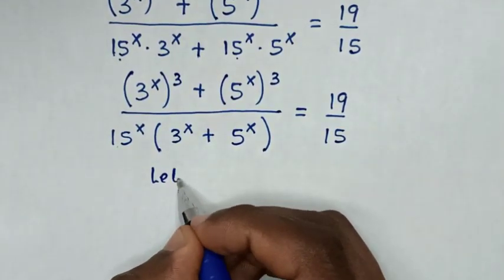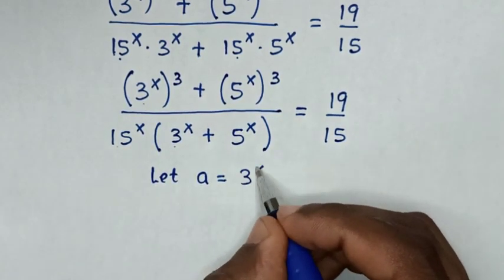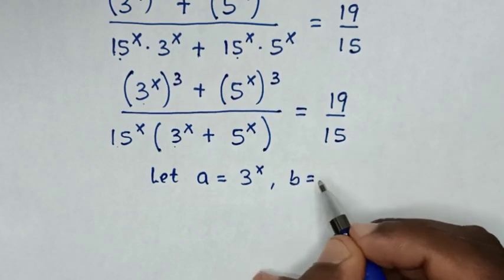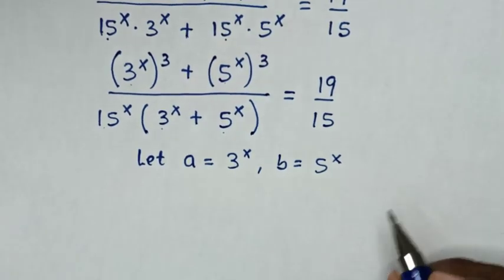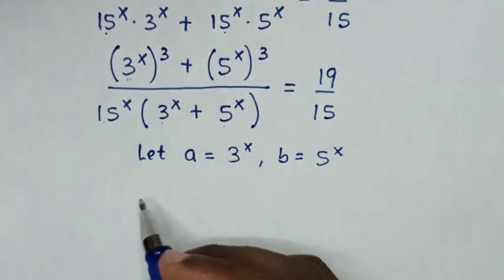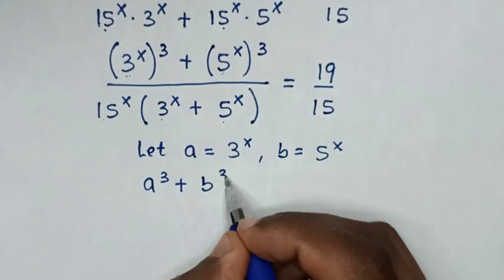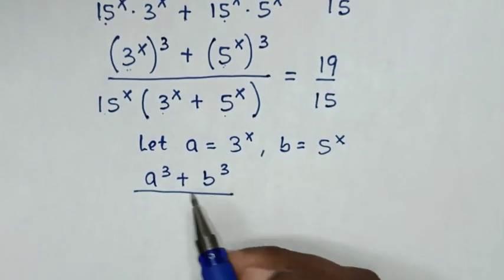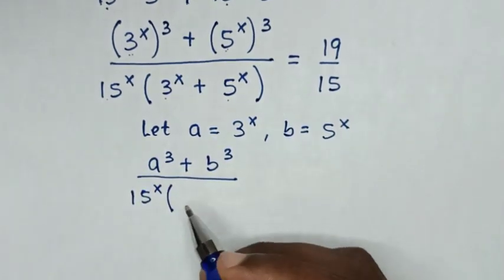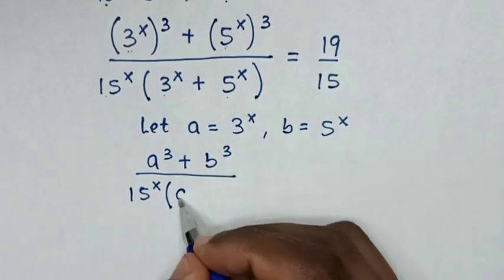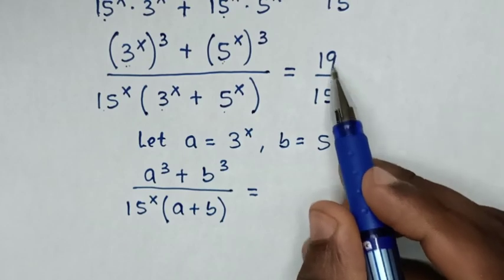In the next step, we let a equal 3^x and b equal 5^x. So our equation becomes a³ plus b³ over 15^x times (a + b), equals 19 over 15.